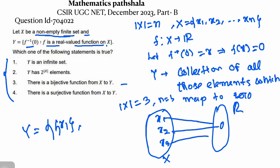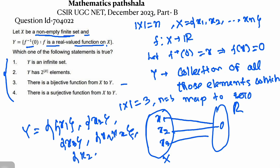We can define a function which takes x₂ to 0, or a function which takes x₃ to 0. Similarly, we can define a function where two elements go to 0, such as x₁ and x₂ both map to 0, or x₃ and x₁ map to 0. Also, we can define a function where all elements map to 0, that means x₁, x₂, x₃ all go to 0, or a function where no elements map to 0, in which case we get the empty set φ.